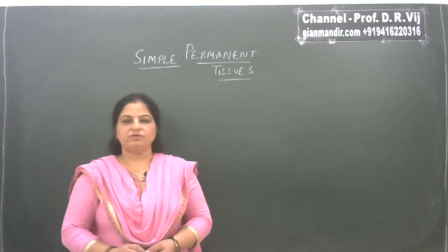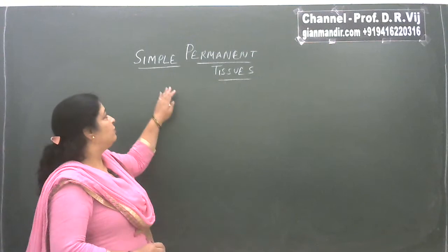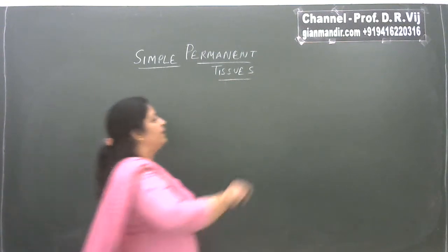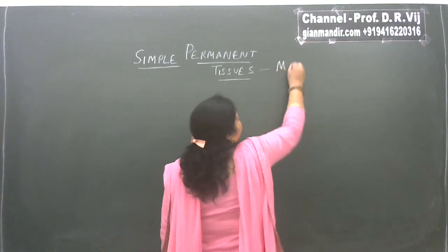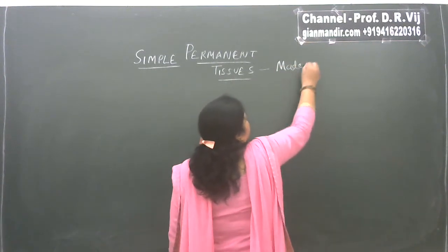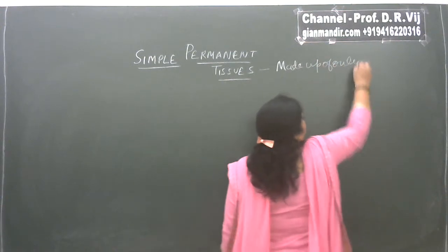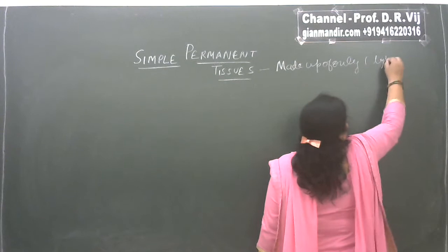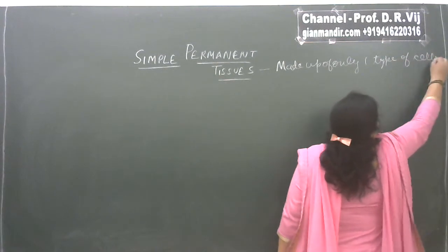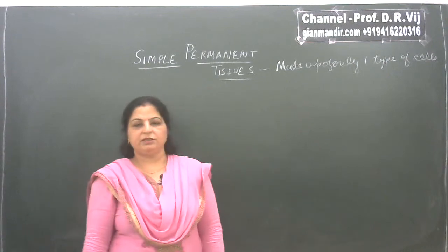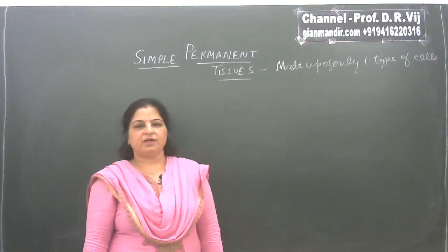Simple permanent tissues are those which are made up of only one type of cells. Simple permanent tissues are further divided into two categories: supportive and protective.